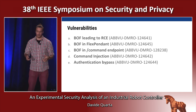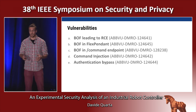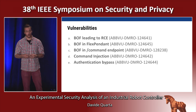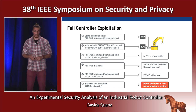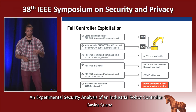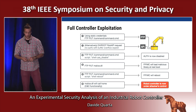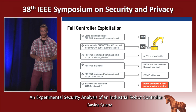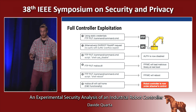Many of these routers had no authentication, known vulnerabilities, or new vulnerabilities. In the controller itself, we discovered several vulnerabilities ranging from buffer overflows leading to remote code execution to command execution and authentication bypass. These vulnerabilities are not interesting per se, but how we used them to gain full control of the controller was the point of this work. The full controller exploitation chains several of these vulnerabilities together.